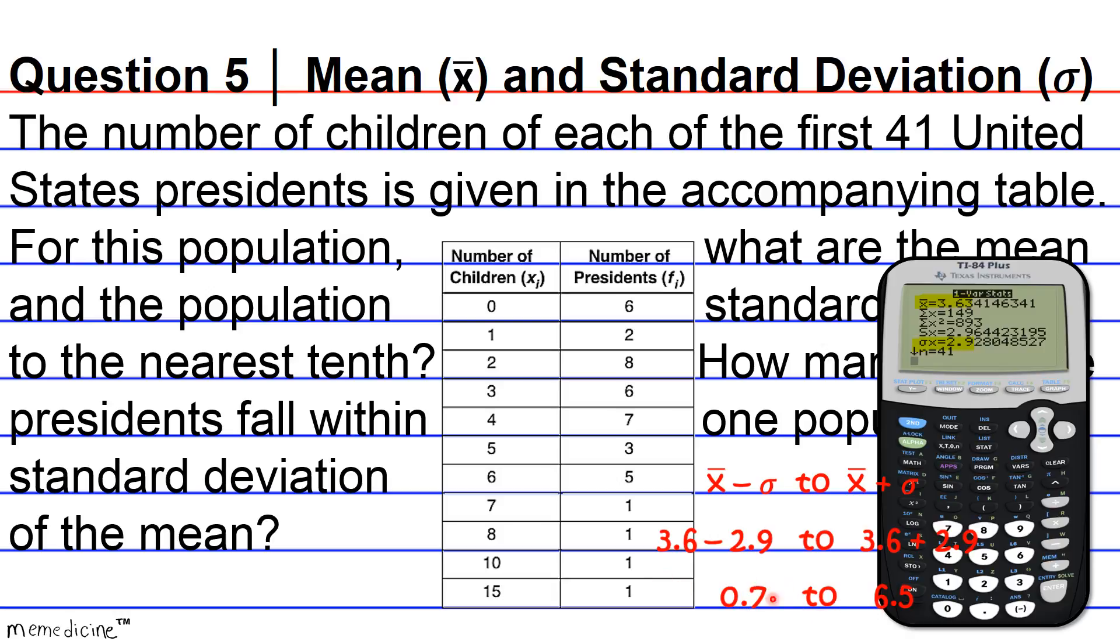Now we cannot have 0.7 kids and we cannot have 6.5 kids. But in all ways, when you're dealing with reality, you usually round up. It would be incorrect to round down to 0 because you have to go to the next value up that's included in the range. So we start our quest for finding out how many presidents fall within one standard deviation at one child. We're not going to round up to 7 at the upper end. That would be incorrect. At the lower end, you round up. And at the upper end of the range when you're dealing with whole number integers or whole people or whole items, you round down at the upper end of the range. That's just a little rule of thumb for you to keep in mind.